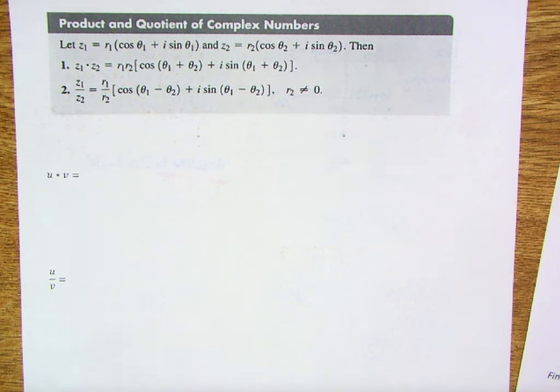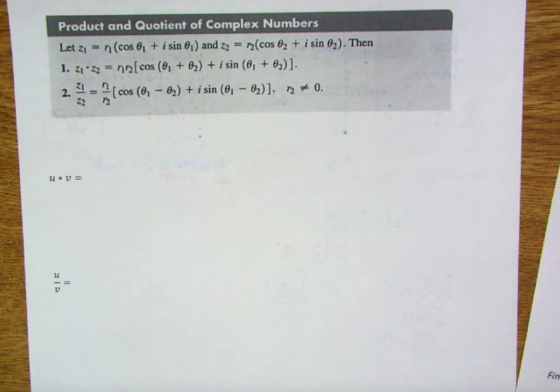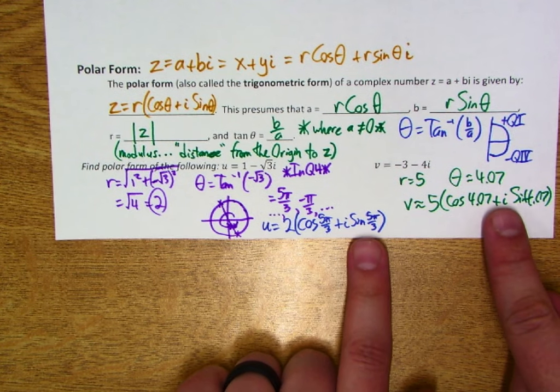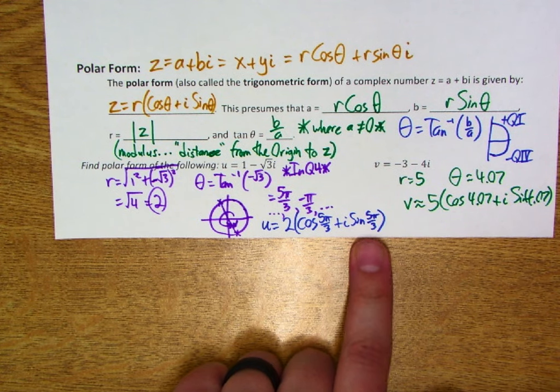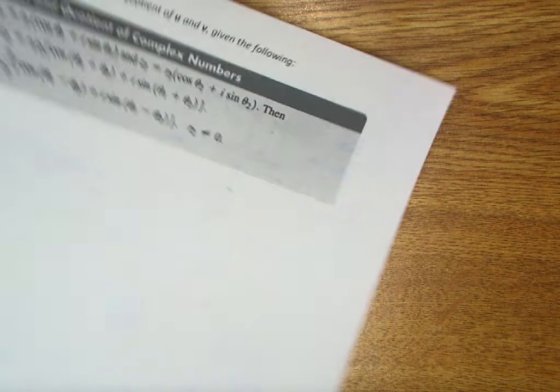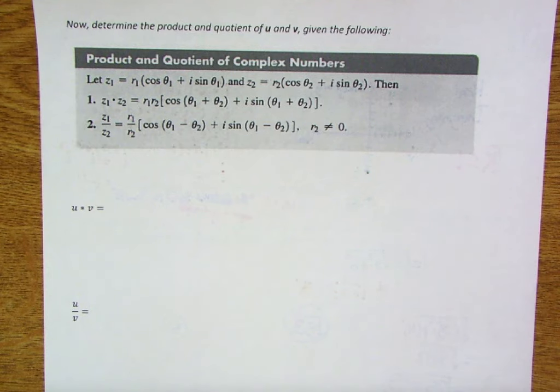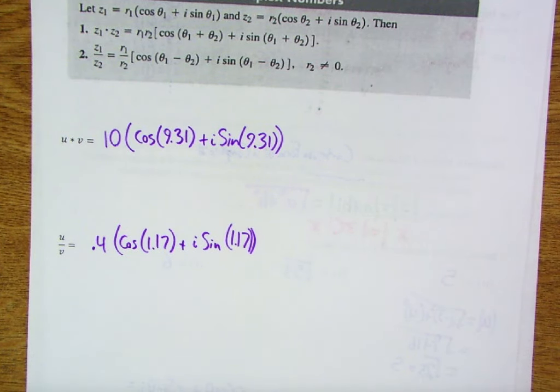On the next page, there are product and quotient rules for multiplying and dividing complex numbers in polar form. Interestingly, angle sum and difference formulas appear in these operations. When you apply those rules using the values of u and v, you should get 10(cos(9.31) + i sin(9.31)) for the product and 0.4(cos(1.17) + i sin(1.17)) for the quotient. This concludes our foundational work with complex numbers in Cartesian and polar systems — de Moivre's theorem and nth roots come next class.